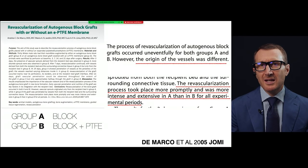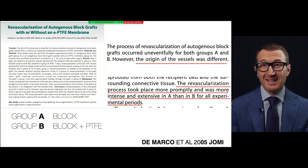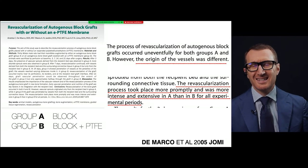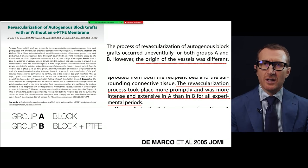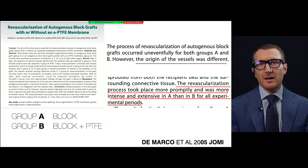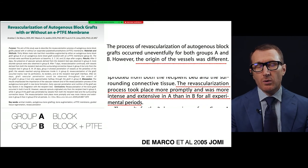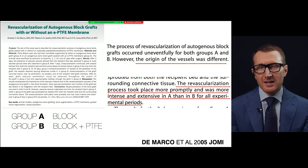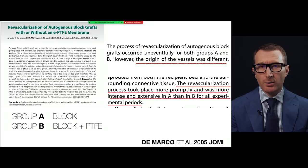The barrier membrane receives vascular support only from the soft tissue side, meaning fewer surfaces support the new vascular network formation, which results in less bone formation. Placing a membrane changes the vascular support and may have a negative effect on new bone formation.